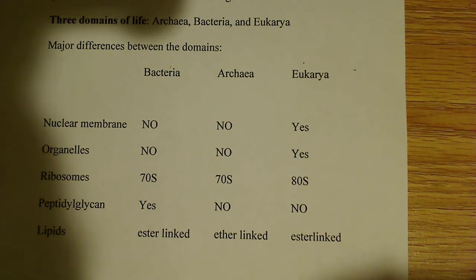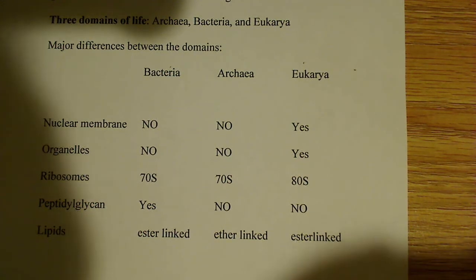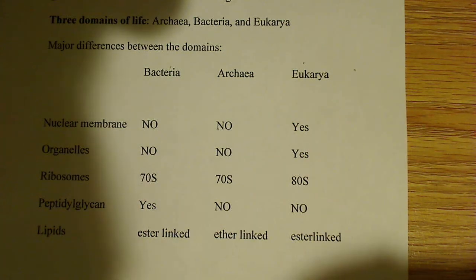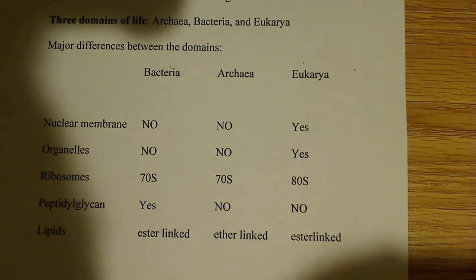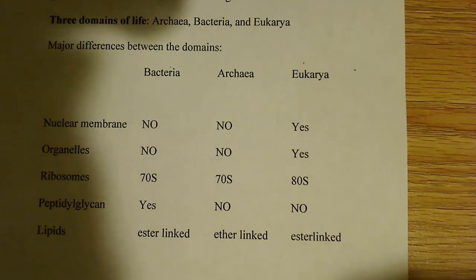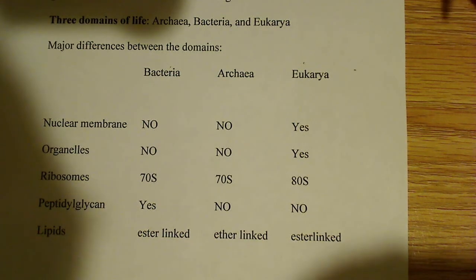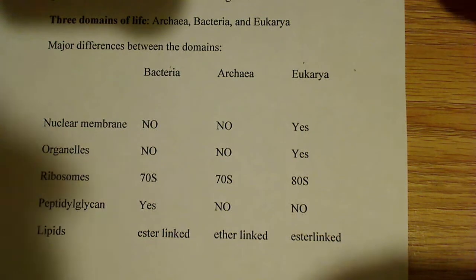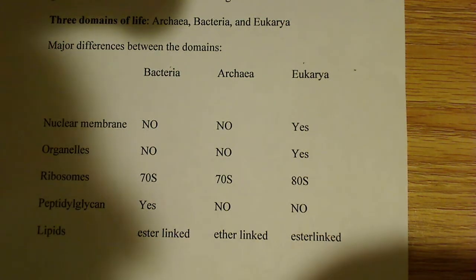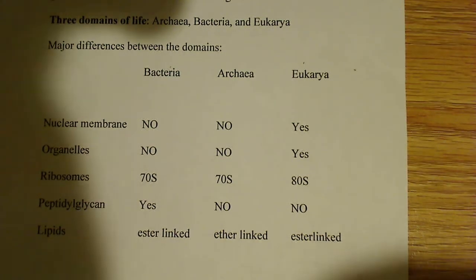Starting with the nuclear membrane: bacteria do not have a nuclear membrane, archaea do not have a nuclear membrane, but eukaryotes do. As far as membrane-bound organelles go, bacteria do not have any, archaea do not have any, but eukaryotes again have membrane-bound organelles. That's for compartmentalization — separation of processes and metabolic pathways, which is extremely important in higher multicellular organisms.